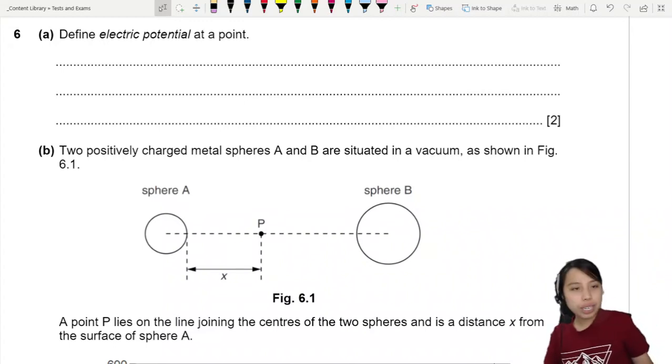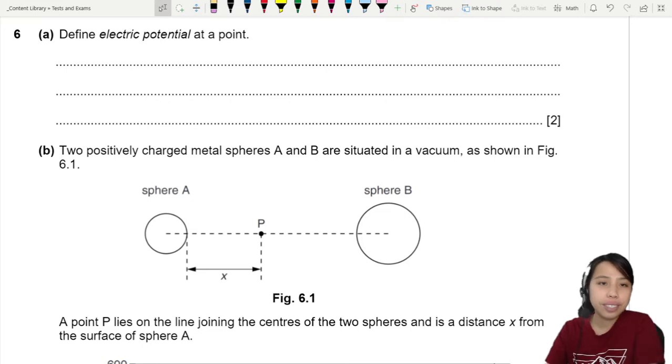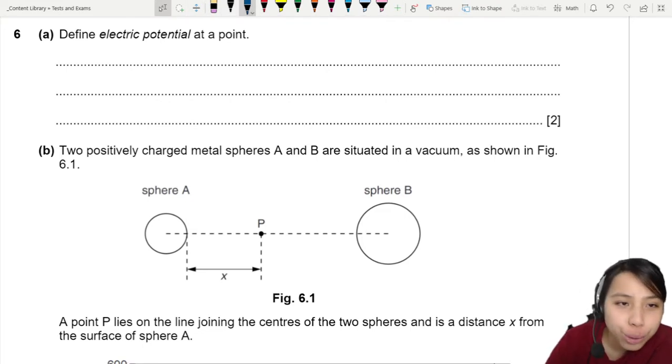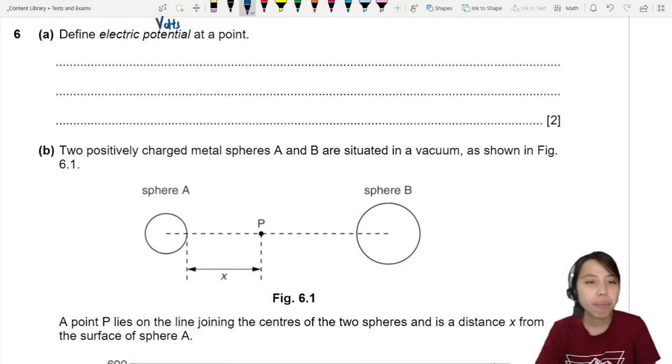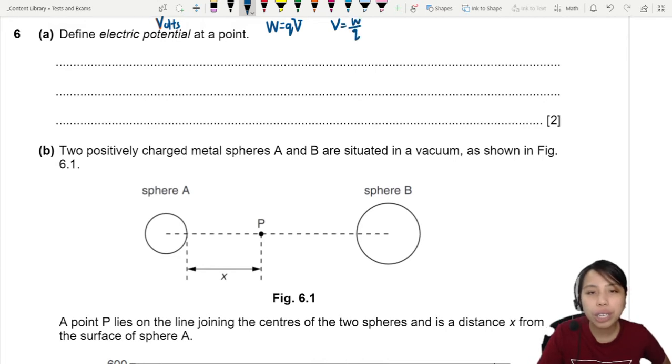Define electric potential at a point. Definitions, got to know the definitions. Potential is also what we used to call volts, voltage, but now we have a formal definition for it. You want to think of work done equals QV. Remember this from AS? Rearrange a little bit.